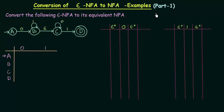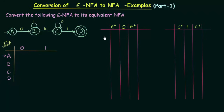In the last lecture we studied how to convert Epsilon NFA to its equivalent NFA, and in this lecture we will see another example of the same. Here is the question: convert the following Epsilon NFA to its equivalent NFA. We have an Epsilon NFA given, and our task is to convert this to its equivalent NFA. We will draw the transition table for the equivalent NFA and follow the procedure discussed in the last lecture.